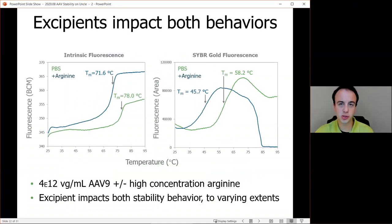We want to take a quick look at formulation impact on these behaviors. Here we have an experiment where we've started with an AAV9 in a PBS buffer. We've added a high concentration of arginine to really show the impact that formulation can have. On the left, we have intrinsic fluorescence data, which is telling us that our capsid proteins are unfolding in the presence of high concentrations of arginine, which is expected. However, on the right side of the slide, we see we have our Sypro Gold fluorescence data, we can see that the high concentration of arginine also decreases the stability by genome ejection, which is kind of unique in all the results. So that's how we can know that excipients can impact both stability behaviors of AAV capsids.